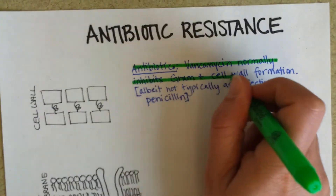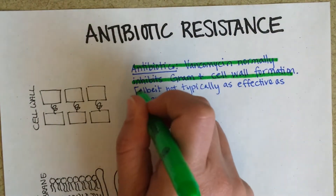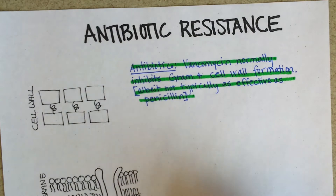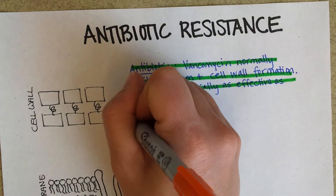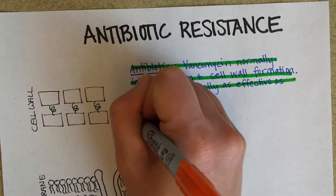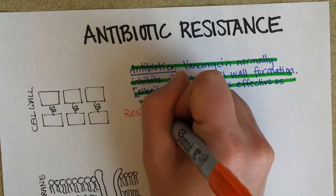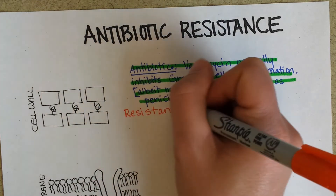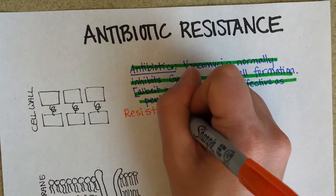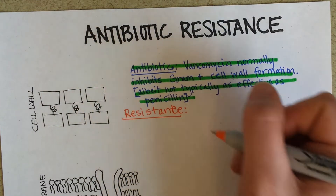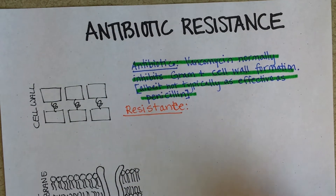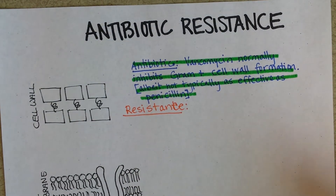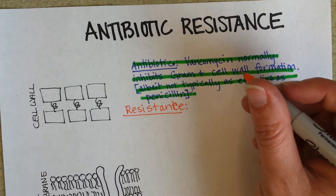We're going to highlight that in green as our example of antibiotic resistance. A way that bacteria can become resistant to vancomycin is that they have different enzymes they're able to use to build their cell wall in a different manner.